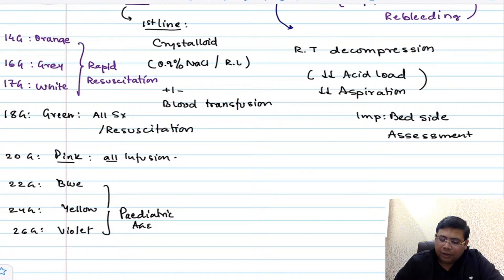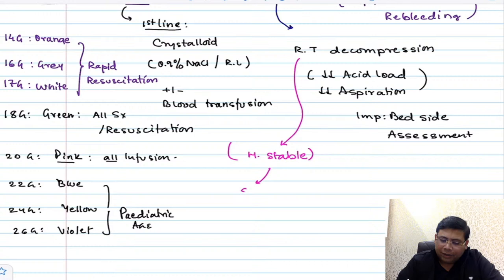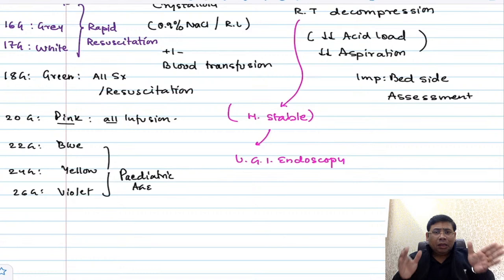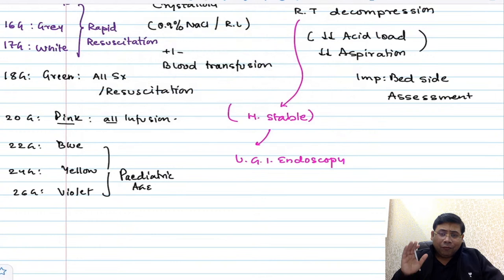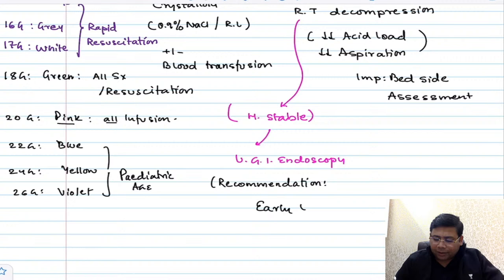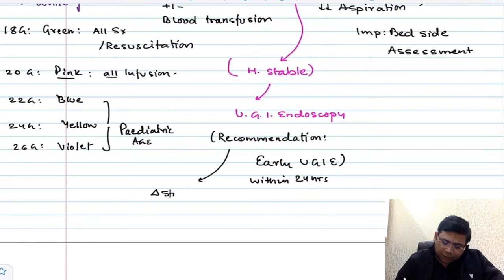We prefer to go for early upper GI endoscopy — within 24 hours. The recommendation nowadays is early upper GI endoscopy within 24 hours. This is helpful because it is not only diagnostic, it is also therapeutic and prognostic in nature.